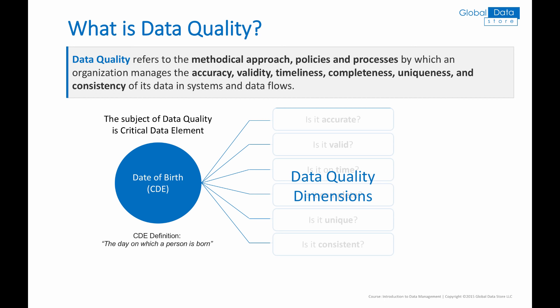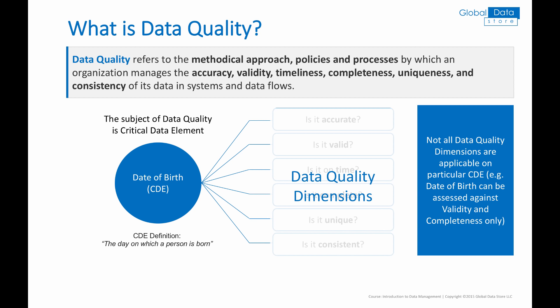There are six fundamental data quality dimensions: accuracy, validity, timeliness, completeness, uniqueness, and consistency. Not all data quality dimensions are applicable on every CDE. For instance, for date of birth, it makes sense to look at quality of data against validity and completeness dimensions.